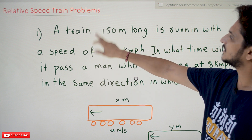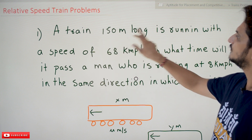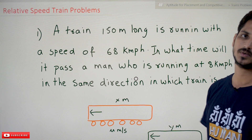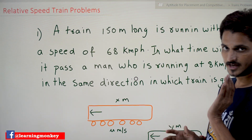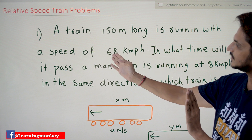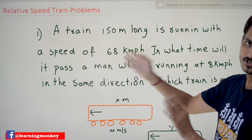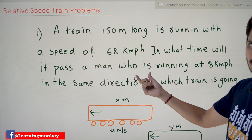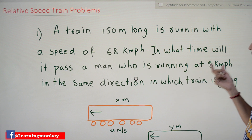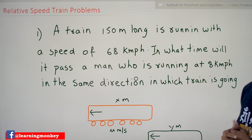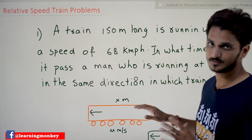Now coming to our first question: a train 150 meters long is running with a speed of 68 kilometers per hour. In what time will it pass a man who is running at 8 kilometers per hour in the same direction in which the train is going?